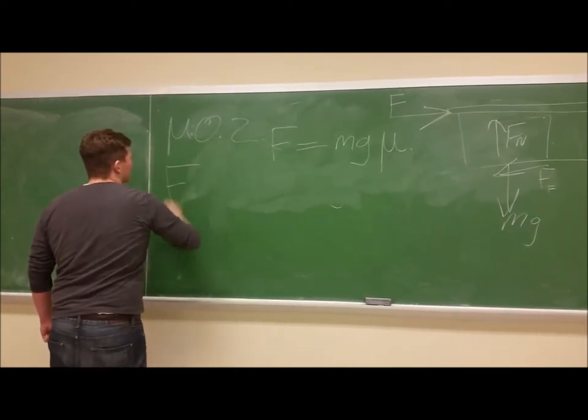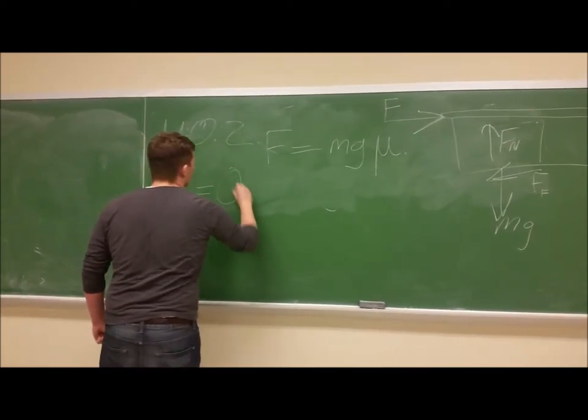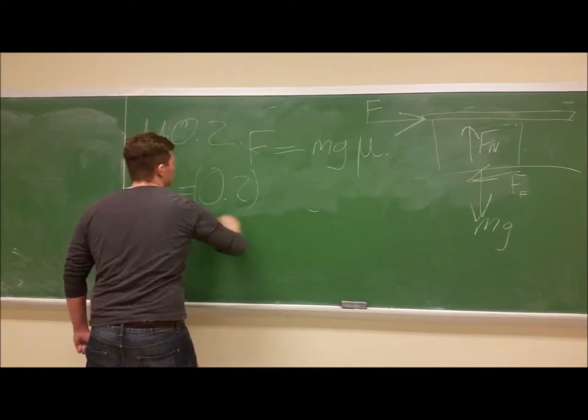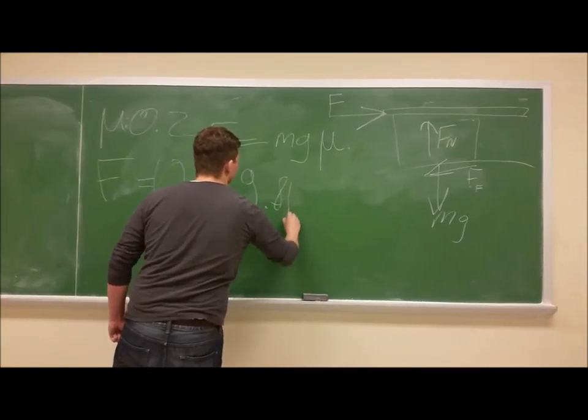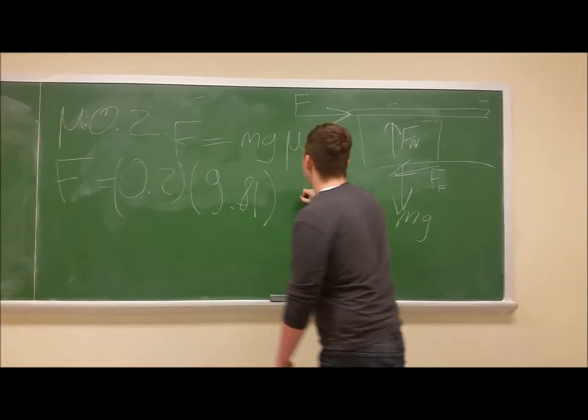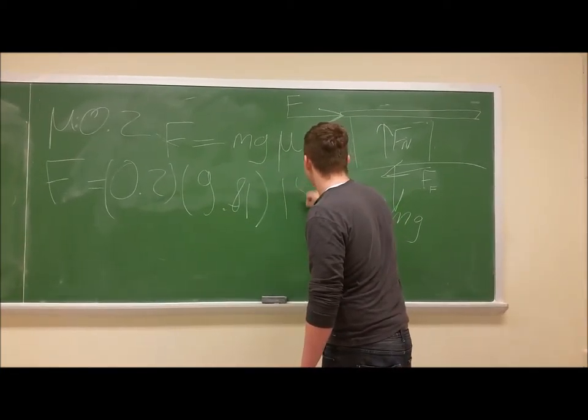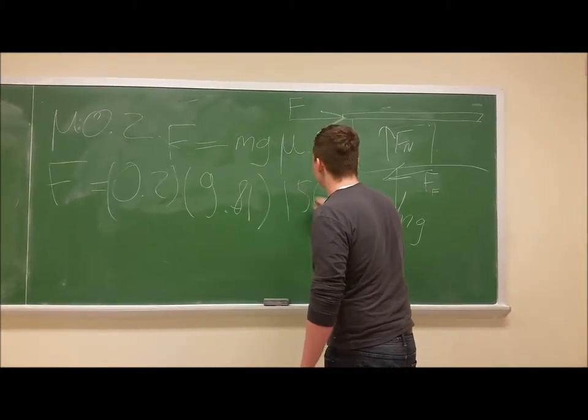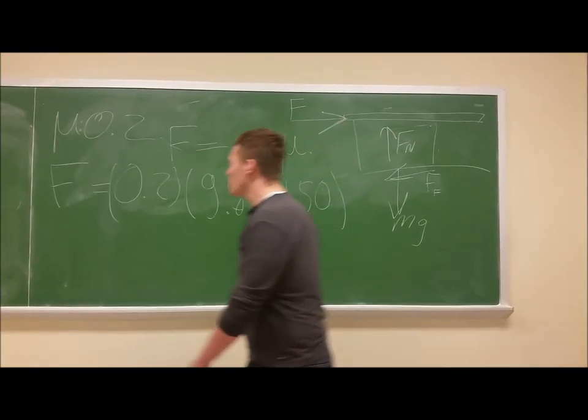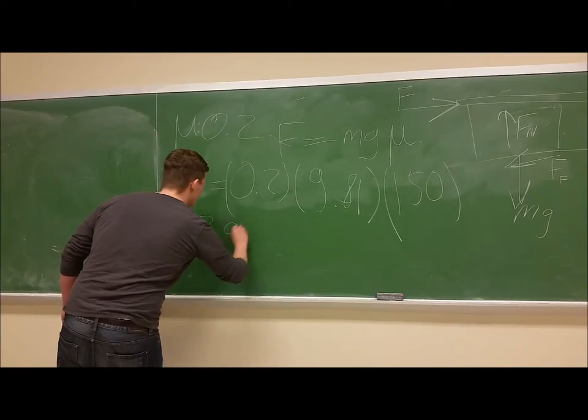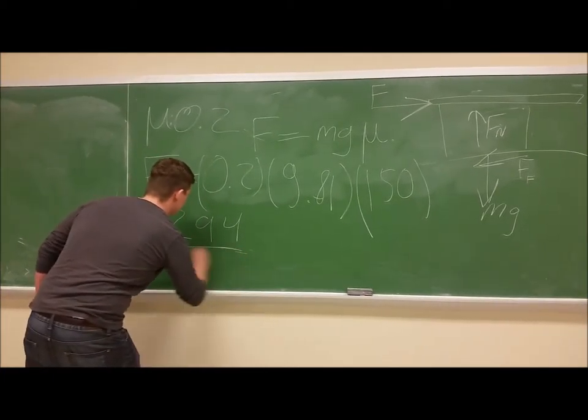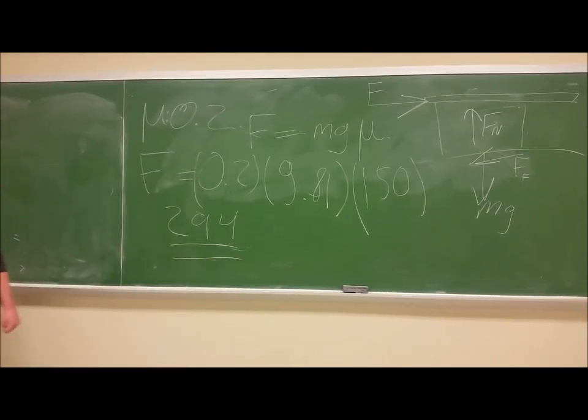And what you end up getting with that is a force of 0.2 times the force of gravity times the weight of the table, for a total force required to overcome that friction of 294 newtons. That's a lot of force. That's really just difficult.